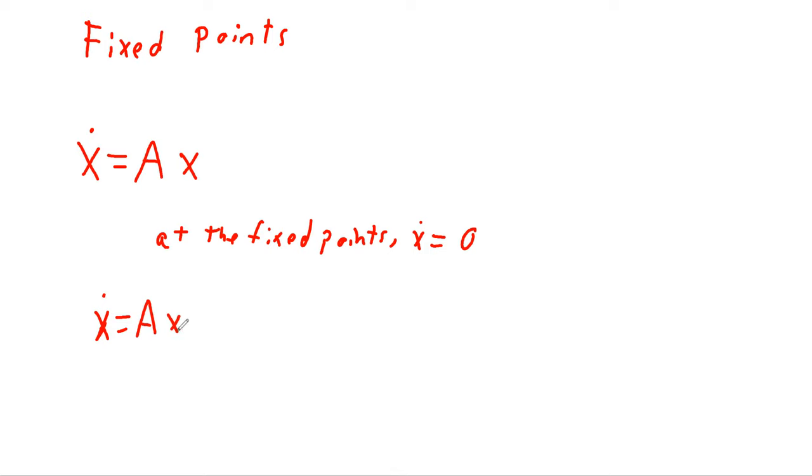You set this up, set it equal to zero, and solve for the state that meets this equation. So you don't need this anymore, and you solve for AX equals zero.